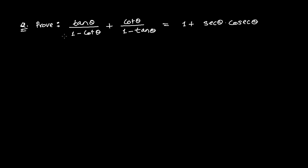How to solve this question? We have to prove here: tan theta divided by 1 minus cot theta, plus cot theta divided by 1 minus tan theta, equals 1 plus sec theta cos theta.